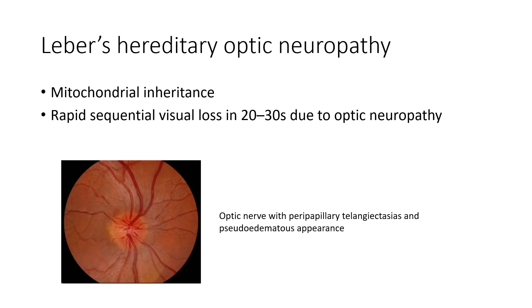Next is Leber hereditary optic neuropathy. It has mitochondrial inheritance. There is rapid sequential visual loss in the 20s to 30s due to optic neuropathy. A fundus image shows the optic nerve with peripapillary telangiectasis and pseudoedematous appearance.